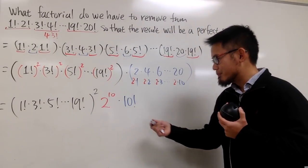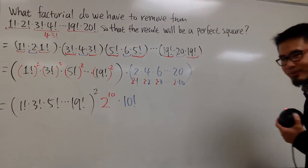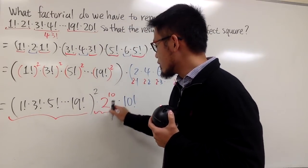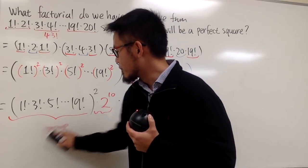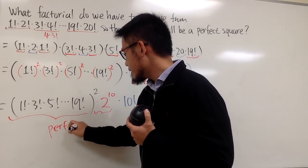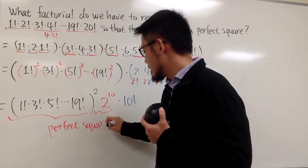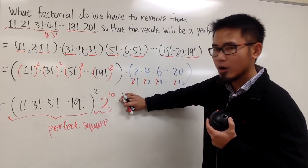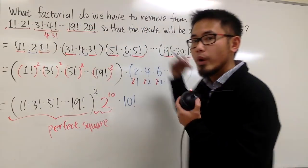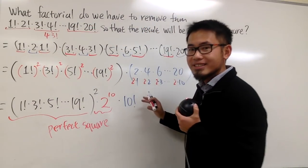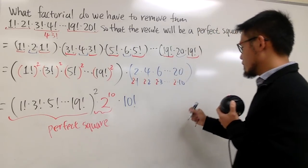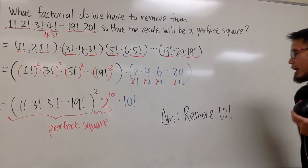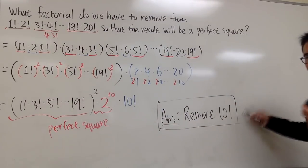This right here, it's a perfect square. It's good. And this right here, it's also perfect square. So both of them are good, so I'll just put it down. They're okay. Perfect square. And this right here, we don't like it. And that's exactly what the question is. I want to remove 10! so that the result of this original product will be a perfect square. So this is the number, this is the factorial that we don't want. So here is the answer. We are going to remove 10!. And we are done. That's it.